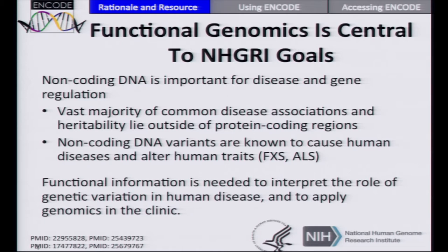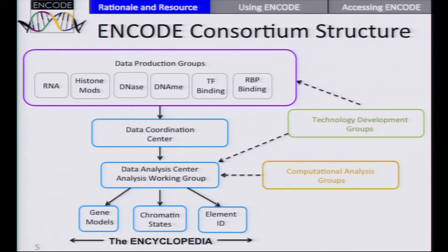Anecdotally, if you look at individual diseases, there are examples like Fragile X, a Mendelian disorder, where essentially all of the heritability lies in one non-coding variant, or things like ALS, where the largest amount of heritability associated with a single variant is a non-coding variant — more than all other known variants put together. So non-coding DNA is very important, but it is not easily studied.